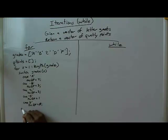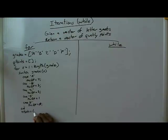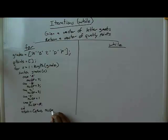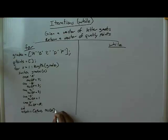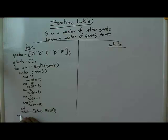Then I end my switch statement. Then I say QPoints equals — and I build my result vector by this concatenation method we've talked about — QPoints equals QPoints, this QP. I could have done this in every step, but I chose to do it this way as we talked about in class. And then I end the loop and display QPoints.